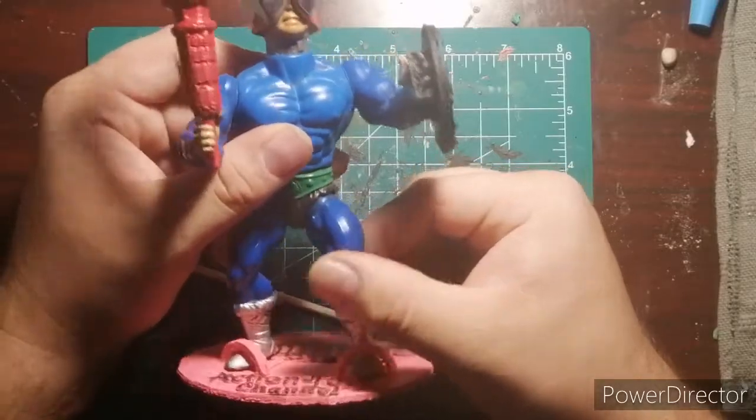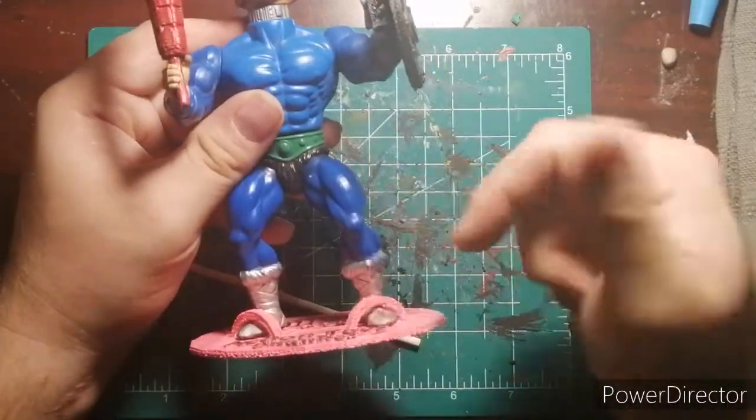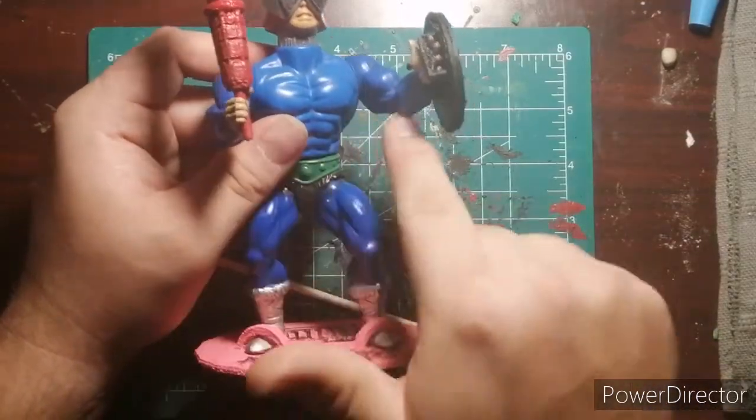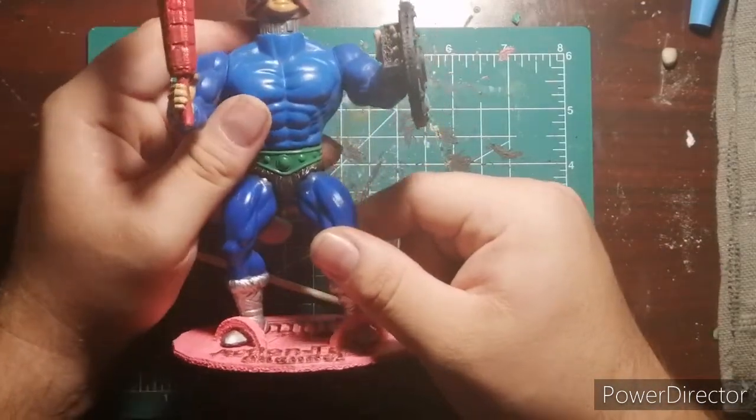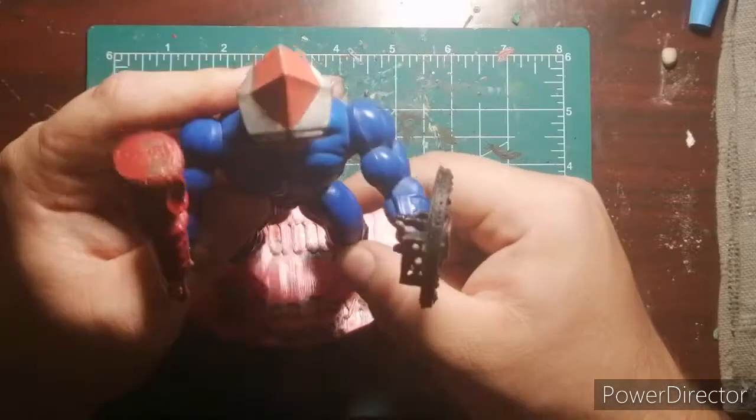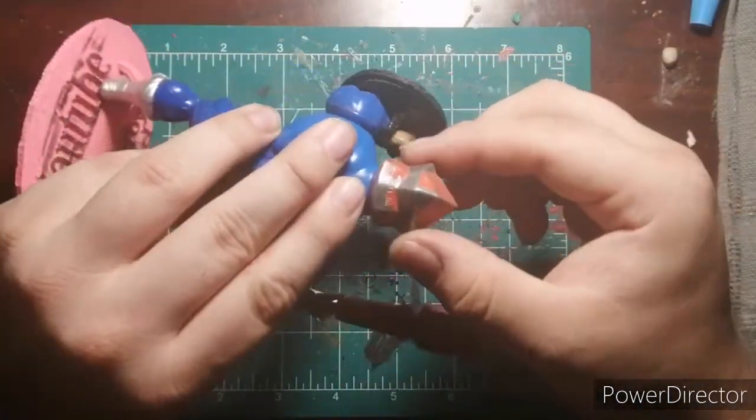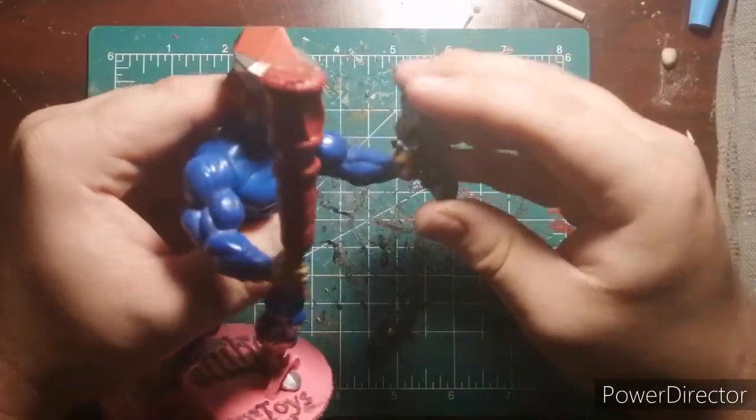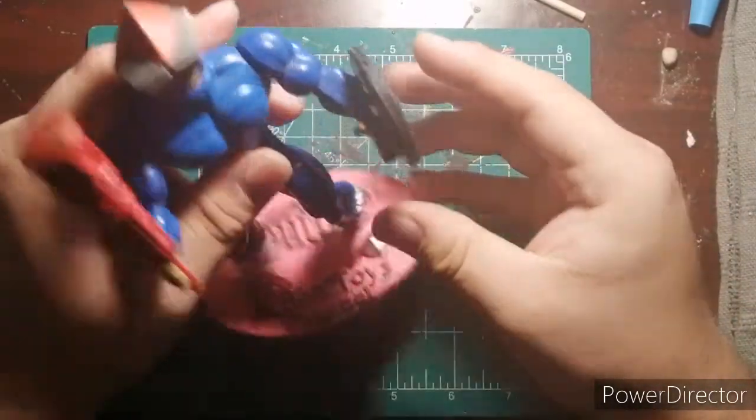But yeah, this is one of my restored projects. This is five different Mekaneks: one, two, three, four, and then the arms come off a different one, five Mekaneks put together. And yeah, the paint on the head is not bad. So guys, as you see, this shield fits the He-Man figure's arm well. It looks good.